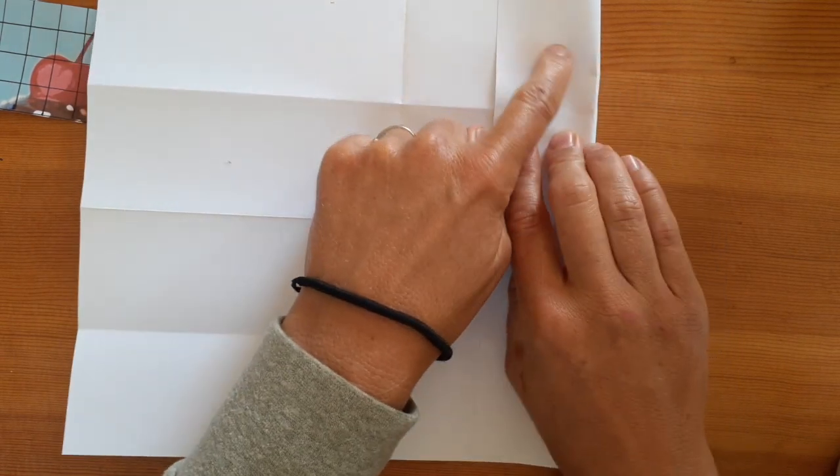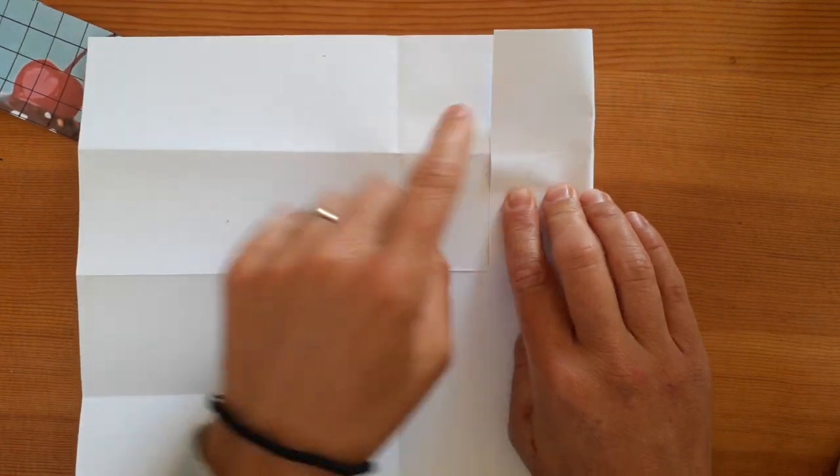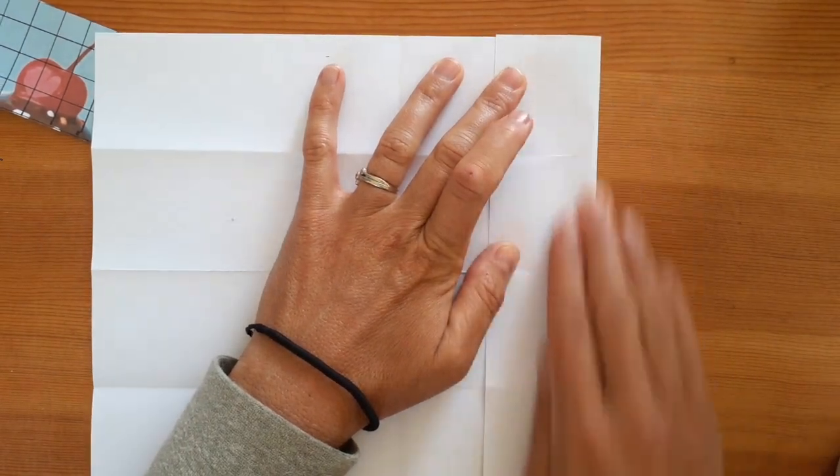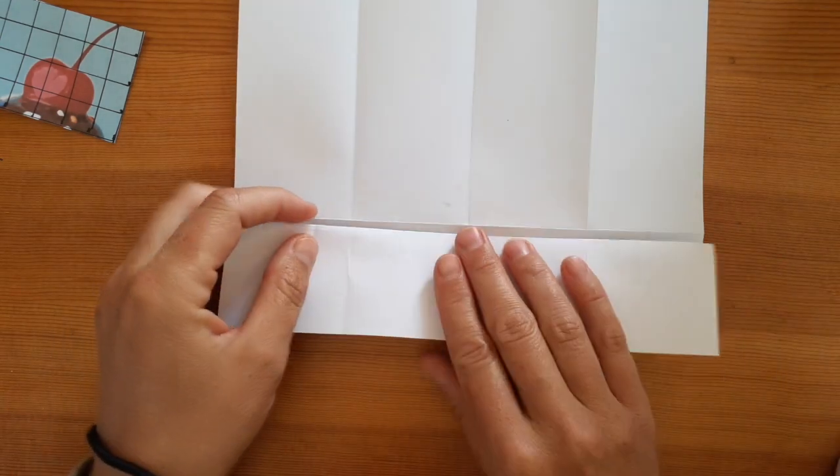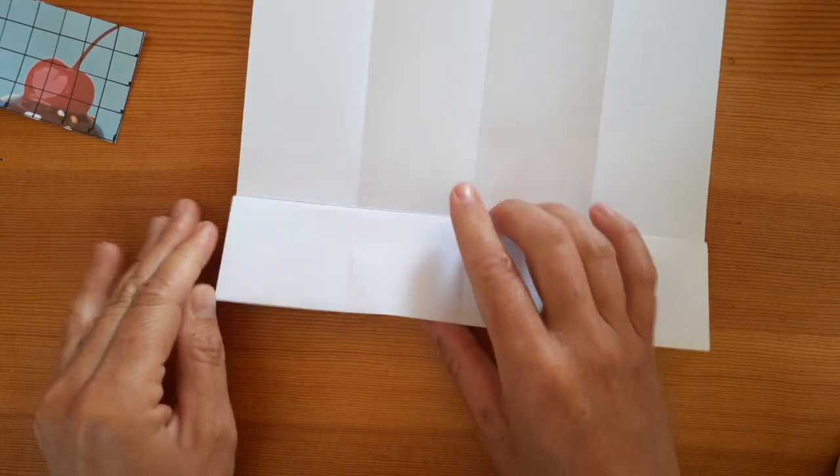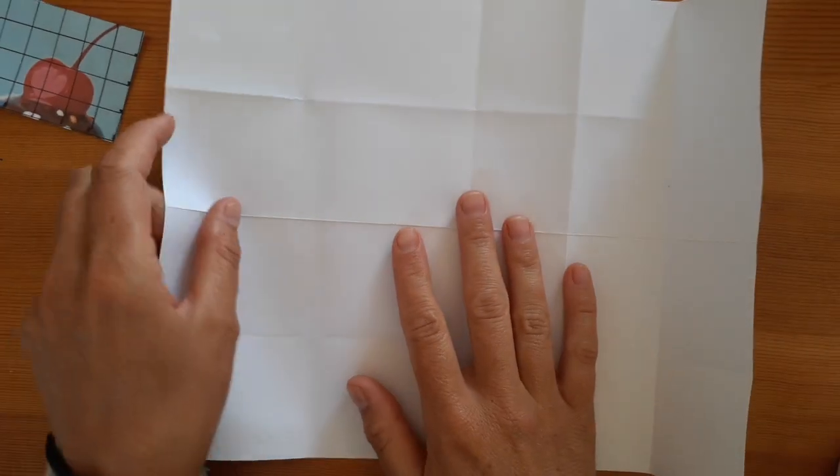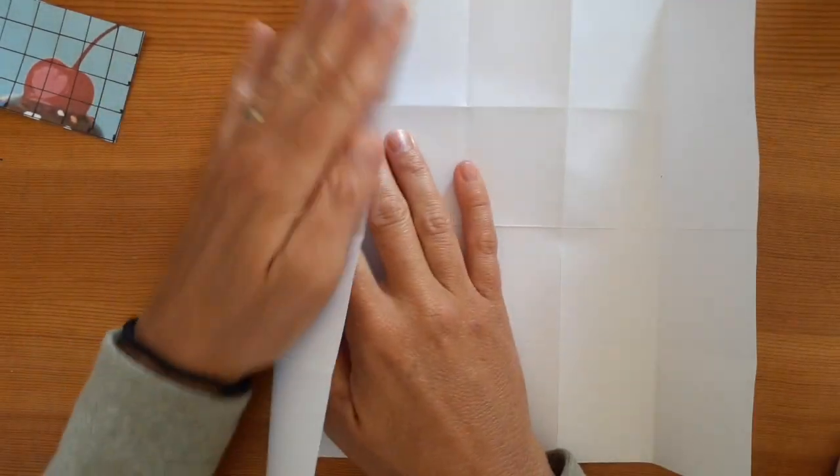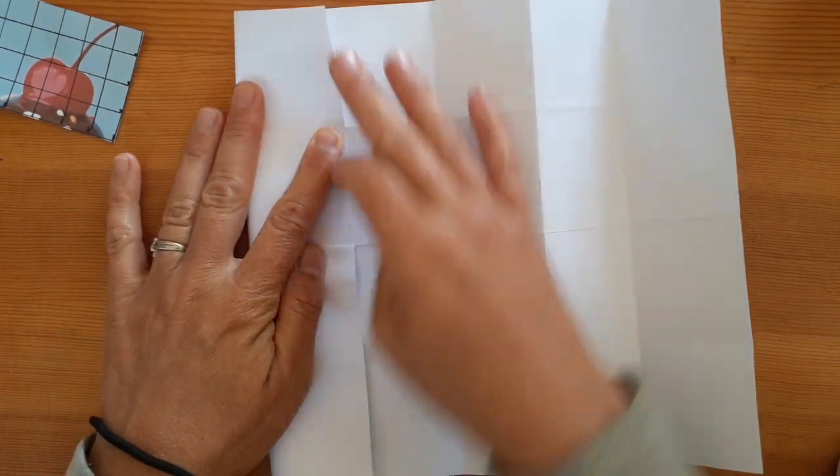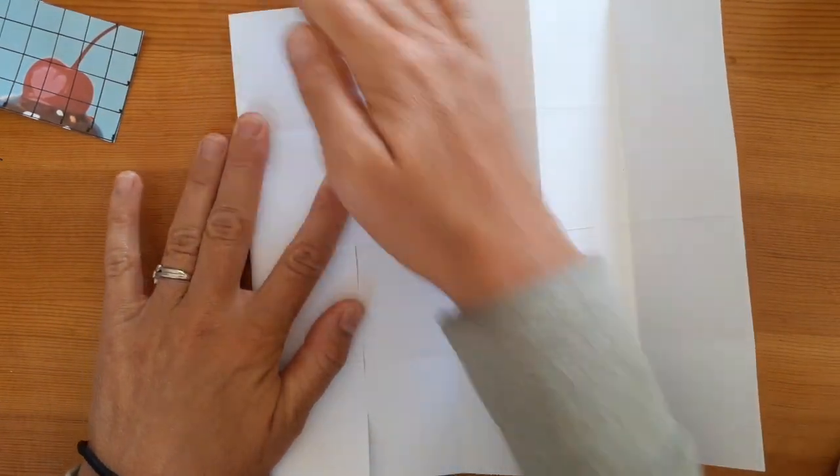Now you're going to flip your paper over and fold that folded edge to the center line to create your second fold, so you'll have three spaces on that side. Now you're going to repeat the same steps on the other side of your paper. Remember, you want the space on the folded side to be the same width as the space on the side between the center line.